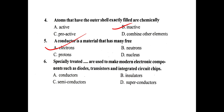Electronic components such as diodes, transistors, and integrated circuit chips are specially treated. We can use these electronic components — diodes, transistors, and integrated circuits — in semiconductors. The options are insulators, semiconductors, superconductors; the answer is semiconductors.